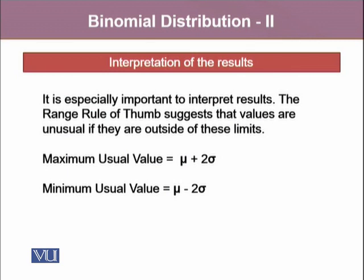The range rule of thumb suggests that values are unusual if they are outside of these limits, when the maximum usual value will be mu plus 2 sigma, where mu represents the mean of the distribution and sigma represents the standard deviation of the distribution. Similarly, the minimum usual value will be mu minus 2 sigma. If any value goes beyond these two limits, we will consider those values as unusual values.